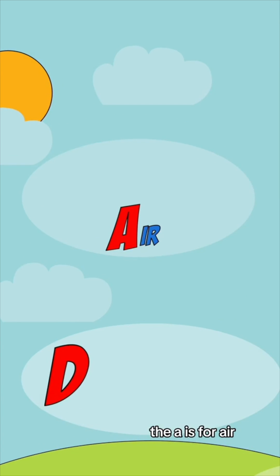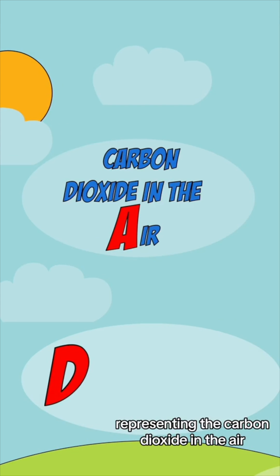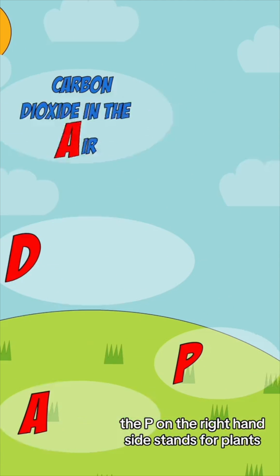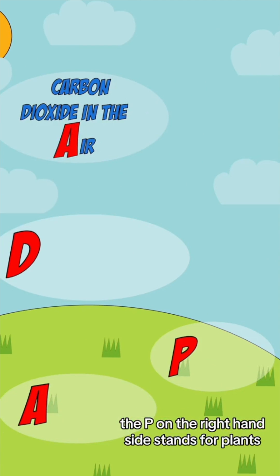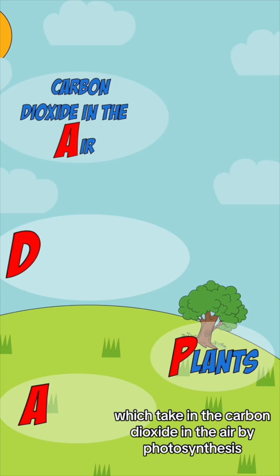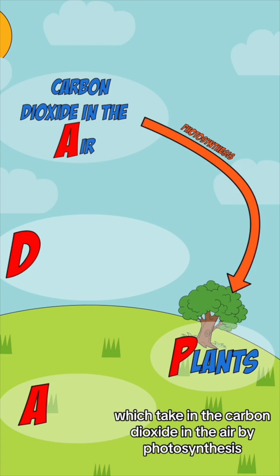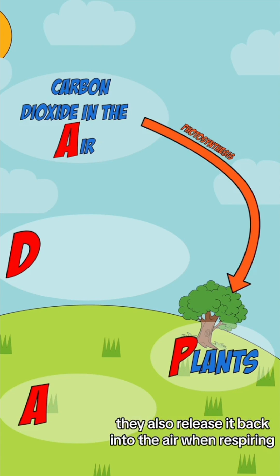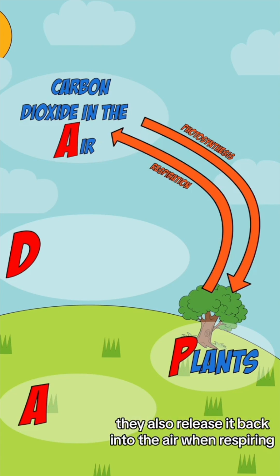The A is for air, representing the carbon dioxide in the air. The P on the right hand side stands for plants, which take in the carbon dioxide in the air by photosynthesis. They also release it back into the air when respiring.